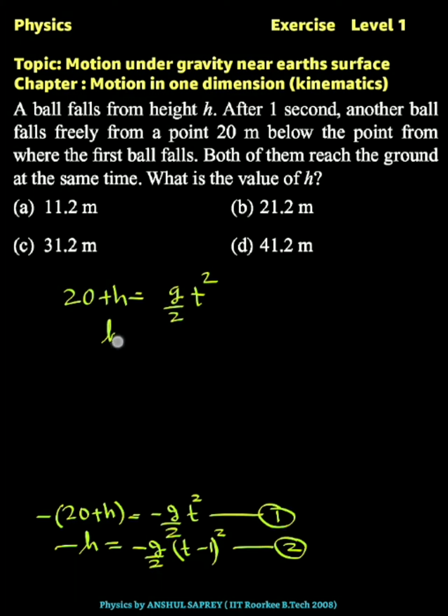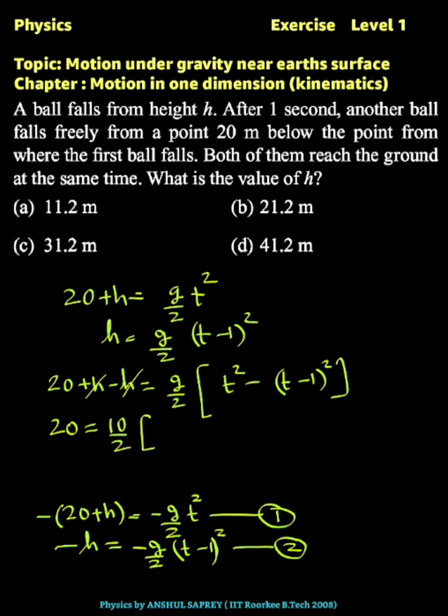So 20 plus h equals g by 2 times t squared, and h equals g by 2 times (t minus 1) squared. Subtracting these equations: 20 plus h minus h equals g by 2 times [t squared minus (t minus 1) squared].